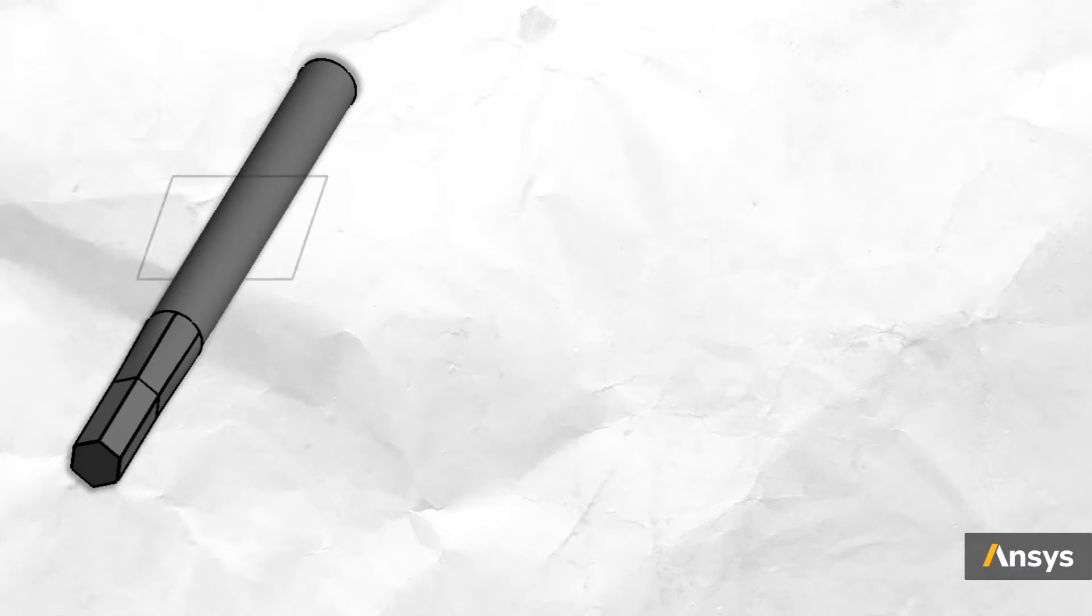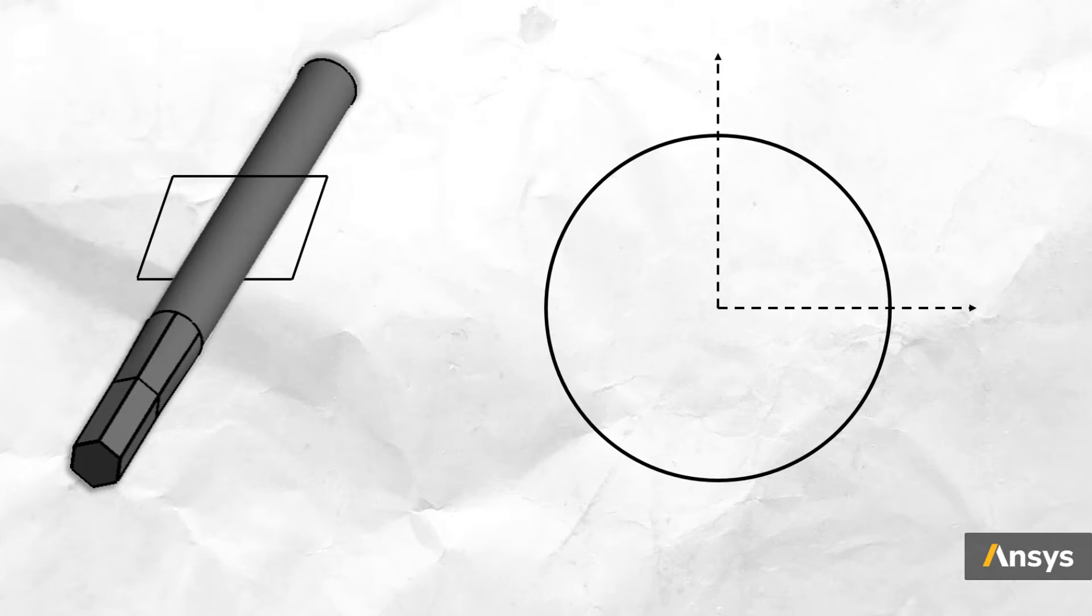Now let's take a cross section of this shaft and observe how it deforms. Let's take a point on its surface and monitor its motion. If the radius of the shaft is r, and if it shears by an angle theta, then the point assumes a new position r cos theta, r sin theta.